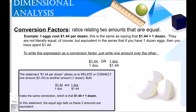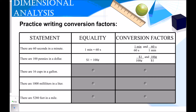One really important piece in dimensional analysis is called a conversion factor. Conversion factors are ratios relating amounts that are equal. For example, if eggs cost $1.44 per dozen, this is the same as saying $1.44 equals one dozen. They're equivalent in the sense that if you have one dozen eggs, you've spent $1.44. To write this as a conversion factor, just write one amount over the other — like a fraction. You can have $1.44 over a dozen, or flip it with the dozen on top.